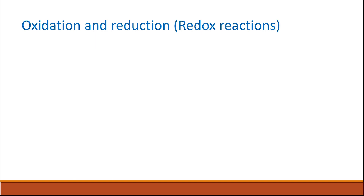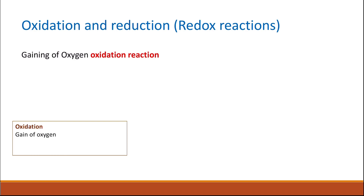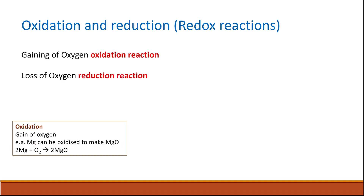This topic also covers oxidation and reduction — the redox reaction. We can define oxidation and reduction using two terms. The first is gain and loss of oxygen. Oxidation is defined as the gaining of oxygen. For example, magnesium can be oxidized to make magnesium oxide because magnesium gained an oxygen.